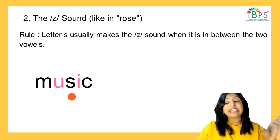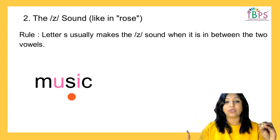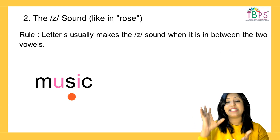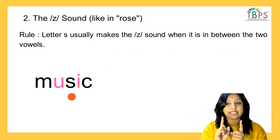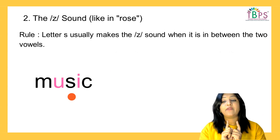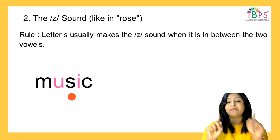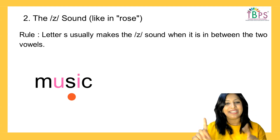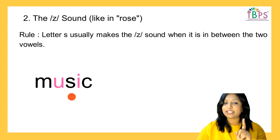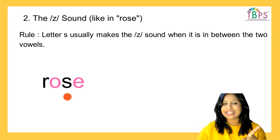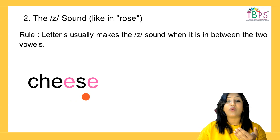What is the rule? When can the letter S turn into the /z/ sound? It's simple: letter S usually makes the /z/ sound when it is between two vowels. Take the word 'music' — S is heard as /z/ because S is between two vowels, U and I. Take 'rose' — S is between two vowels, making the /z/ sound. And 'cheese' — S makes the /z/ sound because it is between two vowels.